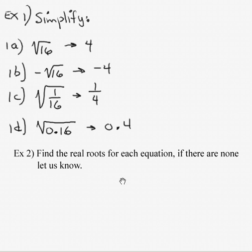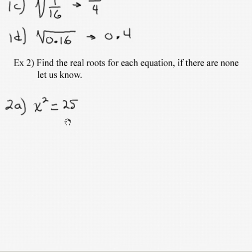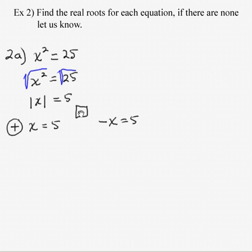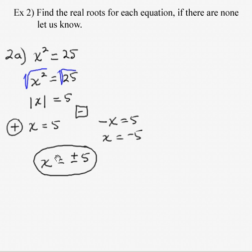Find the real roots for each equation; if there are none, say so. To solve x squared equals 25, we undo the squaring by square rooting both sides. The square root of x squared is the absolute value of x, and the square root of 25 is 5. From the absolute value, in the positive case x equals 5, and in the negative case, the opposite of x equals 5, so x equals negative 5. Our solutions are positive 5 and negative 5 — consistent with the fundamental theorem of algebra, which says the exponent tells us how many answers to expect.